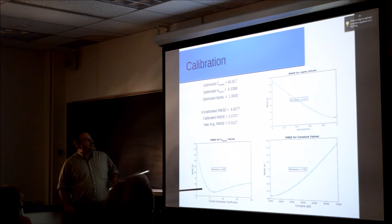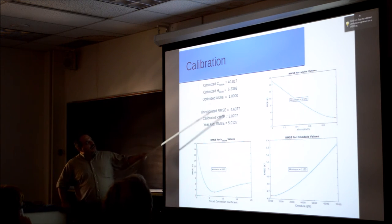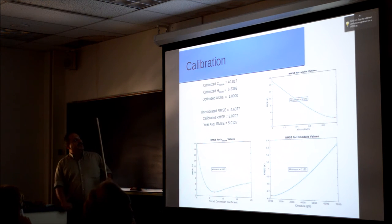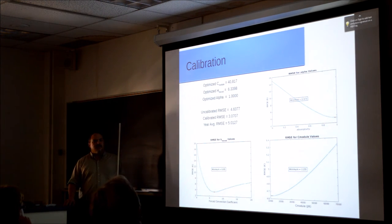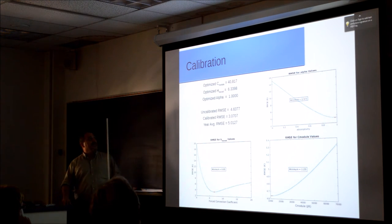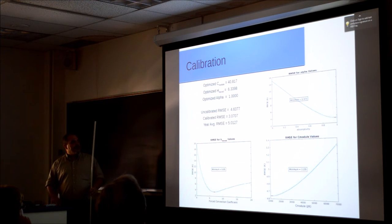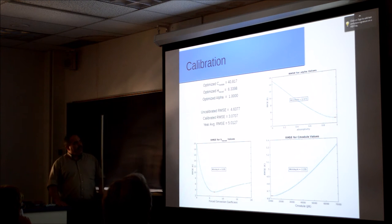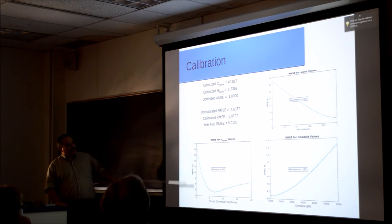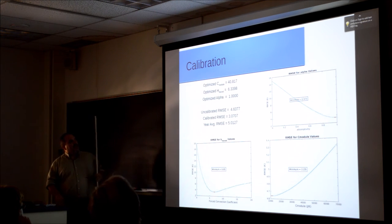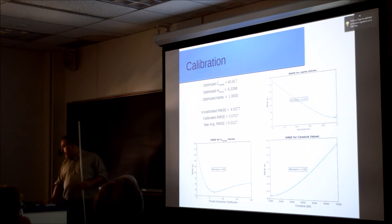I ran into some problems when I started implementing this. For example, I'm pretty sure that the heat capacity of a module does not come out to around 40,000 joules per Kelvin. My back of the envelope calculations for that came out to closer to 2,500, looking at the heat capacity of the glass — when working with thin films, the glass is most of the material. And when we actually take these calibrations done over a single day and extend them to the full year, we're getting around five Kelvin root mean square error.